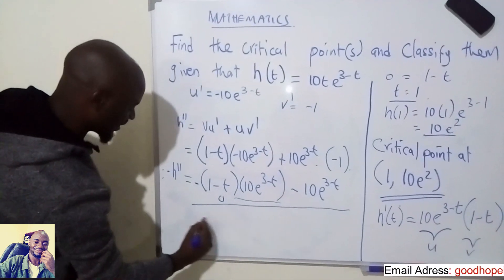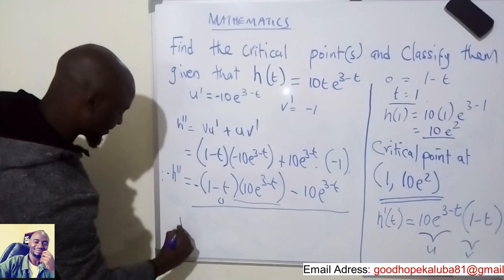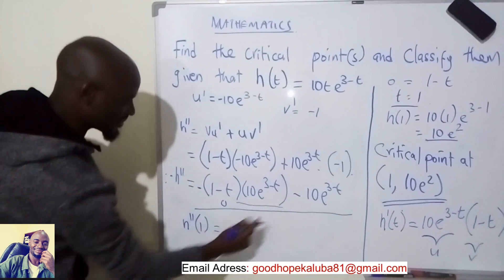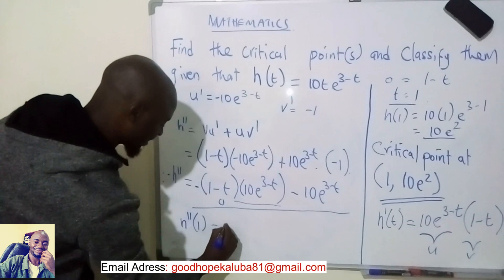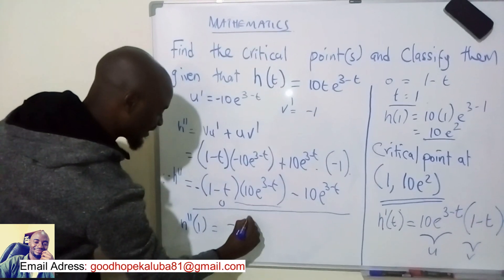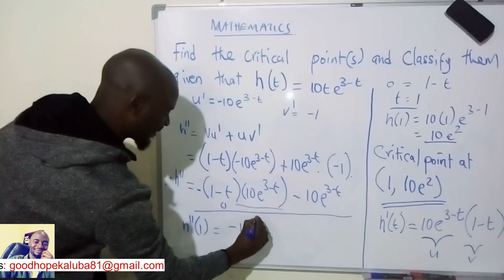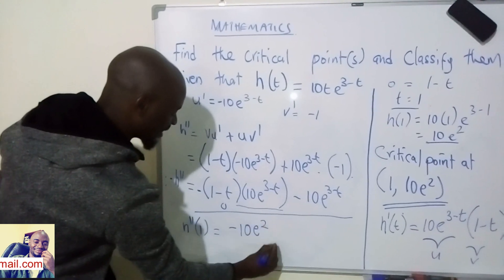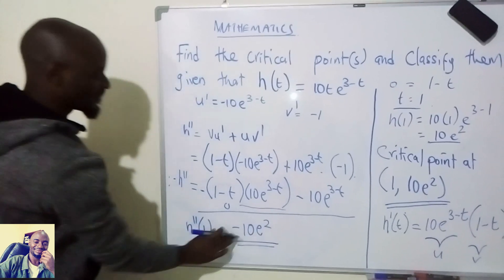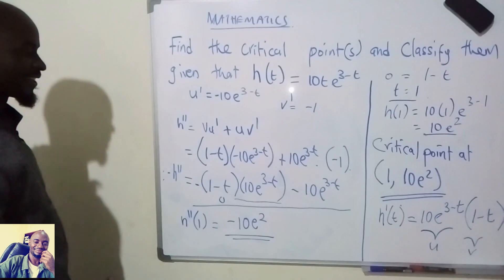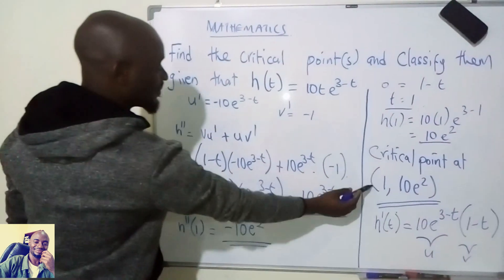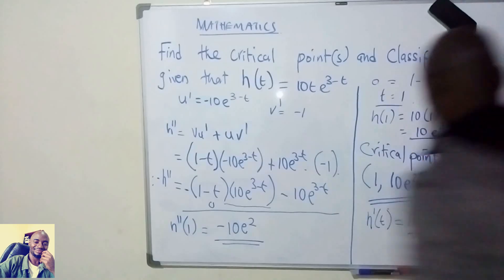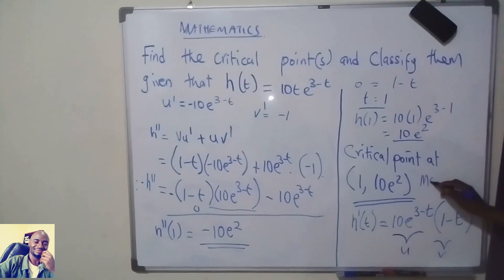We are left with h''(1) equal to negative 10·e^(3-1), which equals negative 10e². Since this result is negative, the critical point is a maximum turning point.